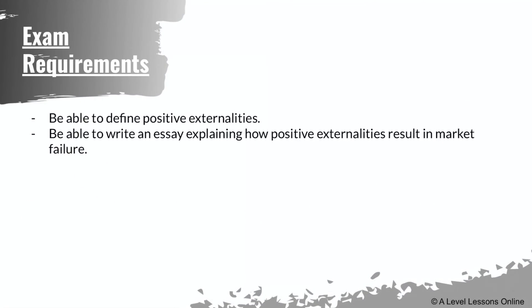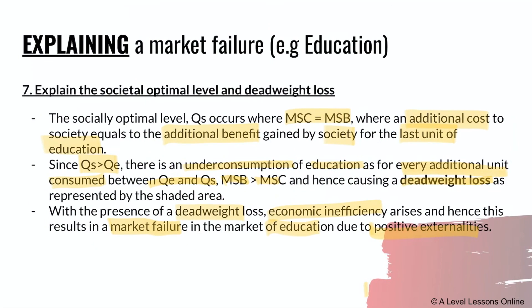For exam requirements, you need to define positive externalities and write an essay explaining how they result in market failure. I've gone through the entire essay — just follow all seven steps and you should be good to go. If you have questions, leave them in the comment section below. Give this video a like and subscribe to the channel.